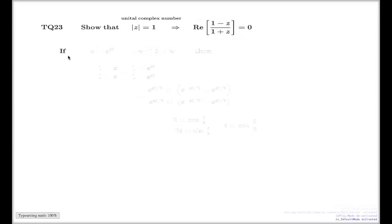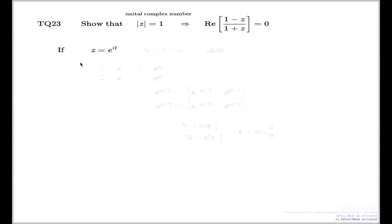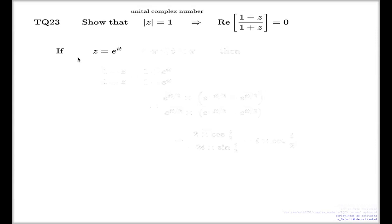So, look at how I'm going to argue this question. If my number is unital, the exponential form for such number will be of this type. Because exponential form in general, it has the modulus of that number times e to the power of i argument of that number. Modulus is 1, that's why nothing is present here.